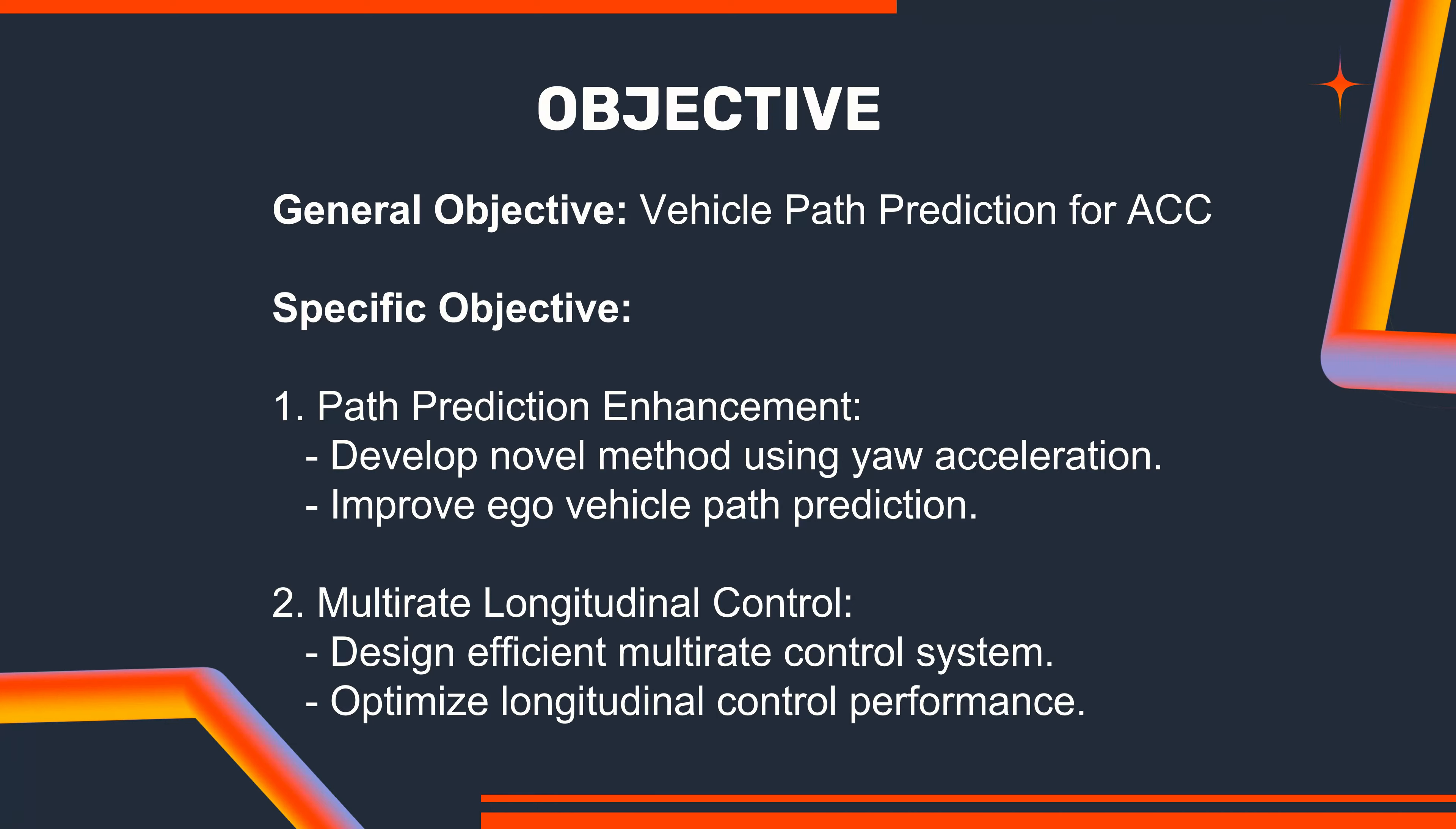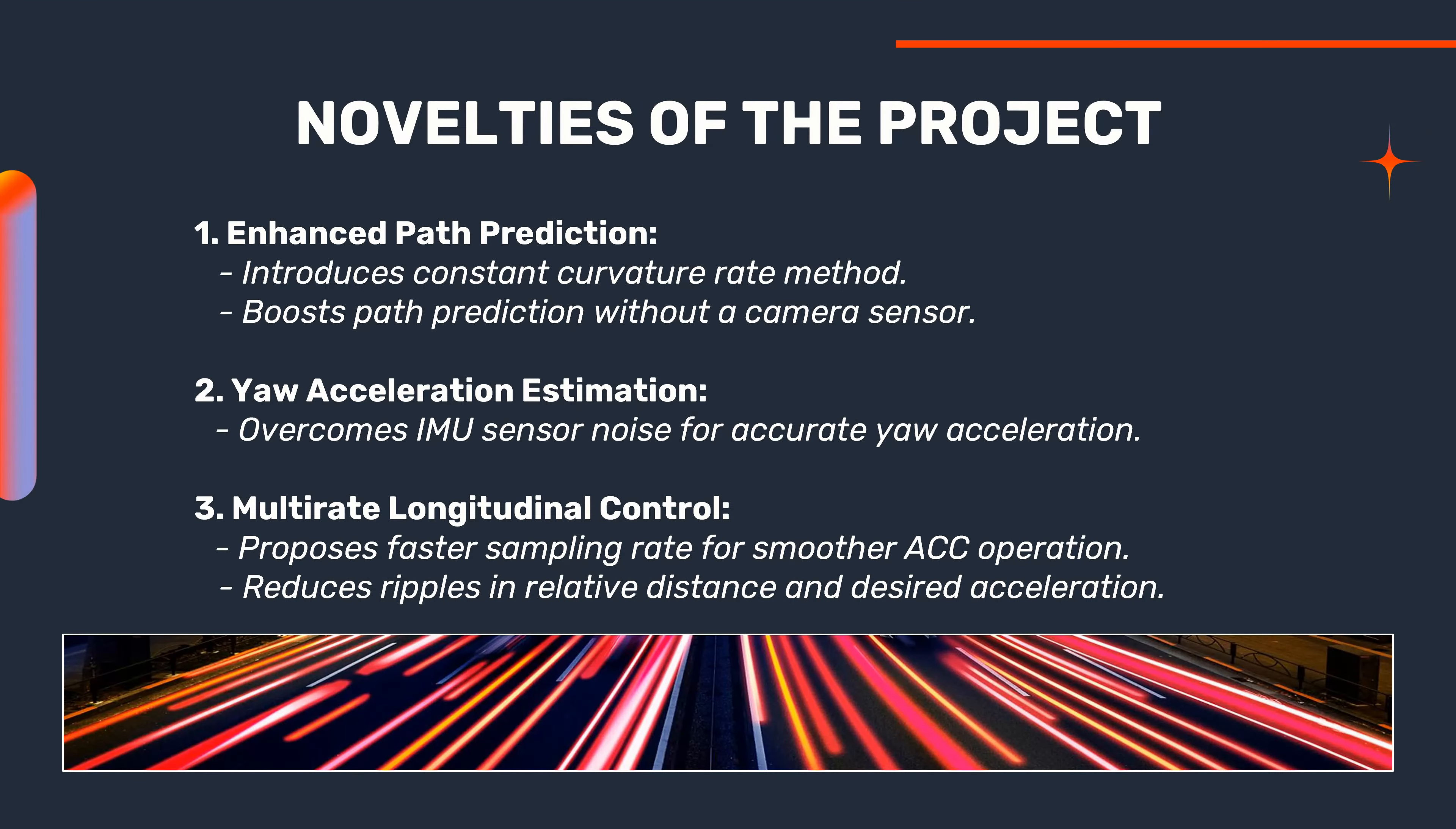The main objective of this research is to design vehicle path prediction employing yaw acceleration for adaptive cruise control. The specific objectives are to develop a path prediction method using yaw acceleration to improve the path prediction performance of the ego vehicle, and to develop multi-rate longitudinal control to improve longitudinal control performance.